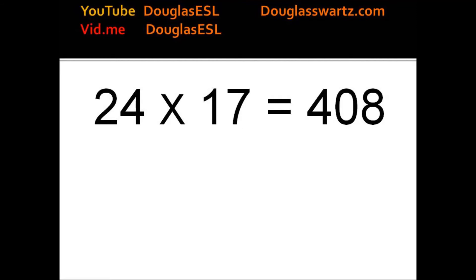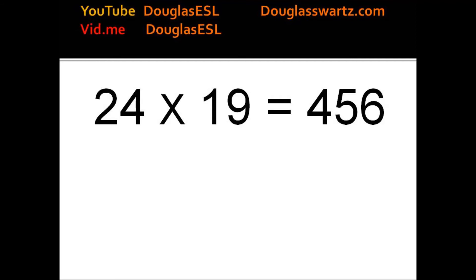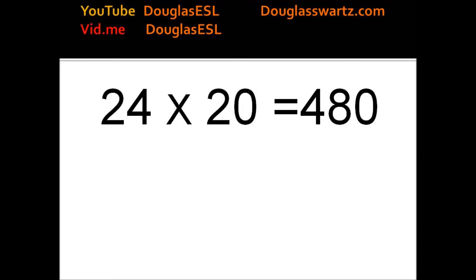24 times 17 equals 408. 24 times 18 equals 432. 24 times 19 equals 456. 24 times 20 equals 480.